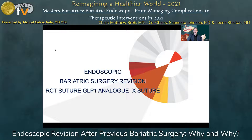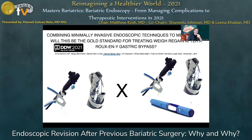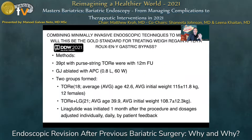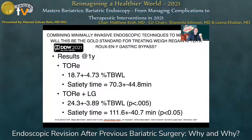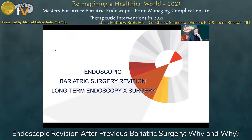We have another RCT from Brazil — Dr. Ana Carolina Hoff — with 39 patients with purse-string transoral outlet reduction (TOR) at 12 months follow-up and previous APC. Two groups were formed: one TOR group and one TOR with liraglutide, adding a GLP-1 analog. The TOR group achieved 18.7% total body weight loss, and the TOR plus liraglutide group achieved significantly more: 24.3%. It also had a positive influence on satiety time.